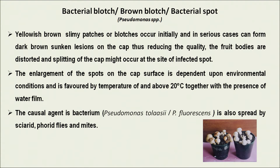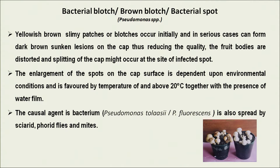Now coming to bacterial diseases — I will cover the most common ones of frequent occurrence both in India and worldwide. One of the most common is bacterial blotch, also known as brown blotch or bacterial spot, caused by Pseudomonas species. Earlier it was called Pseudomonas tolaasii, but now its name has been changed to Pseudomonas fluorescens. Yellow slimy patches occur initially on mushroom fruit bodies; in serious cases these spots turn dark brown and sunken. They reduce the quality of fruit bodies and sometimes split the mushroom cap, reducing both quantity and quality.